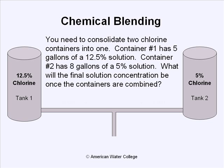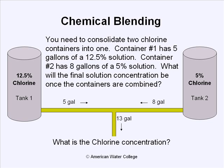We're going to be adding five gallons of a 12.5% solution to eight gallons of a 5% chlorine solution, which will give us 13 gallons of some solution. So the question becomes: what is the final chlorine concentration?